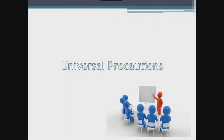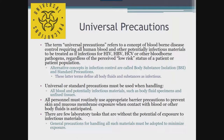So what does it mean when we say that we follow universal precautions? This is an important concept that anyone in the laboratory should fully understand. The term universal precautions refers to a concept of bloodborne disease control requiring all human blood and other potentially infectious materials to be treated as if infectious for HIV, hepatitis B or C, or other bloodborne pathogens, regardless of the perceived low risk status of a patient or patient population.